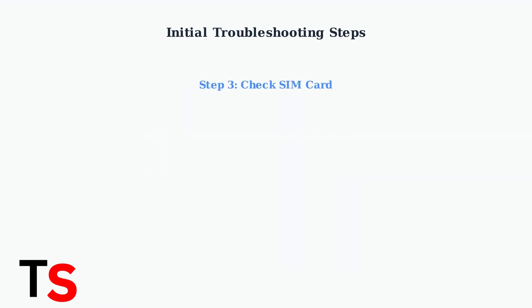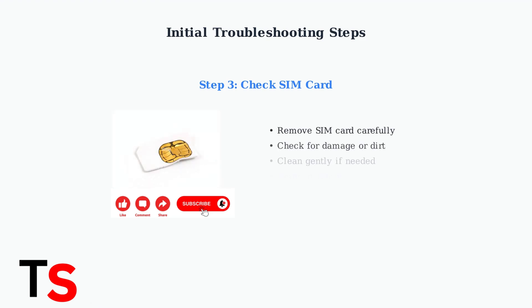Check your SIM card by carefully removing it from the gateway. Look for any visible damage, dirt, or corrosion on the gold contacts. Clean it gently if needed, then reinsert it firmly to ensure proper connection.